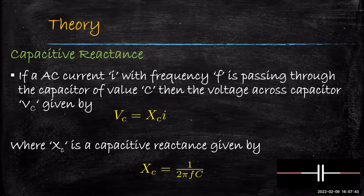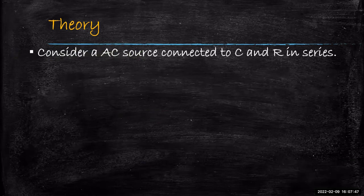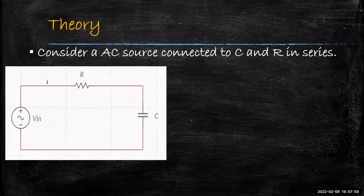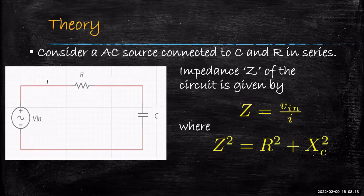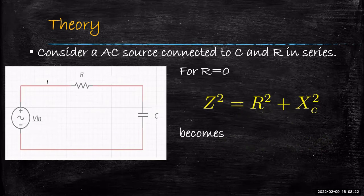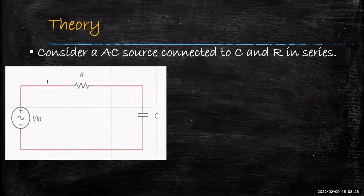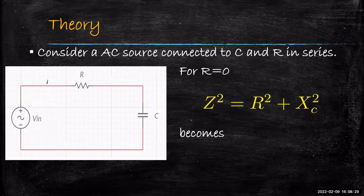Xc depends on the frequency of the circuit. Now let us consider an AC source connected to C and R in series — an AC signal connected to resistance R and capacitor C in series, with current I passing through the circuit. The impedance Z is given by Z = Vin / I, where Z² = R² + Xc². If we make R equal to 0, then Z² = Xc², so Z equals Xc, which is 1 upon 2πFC.